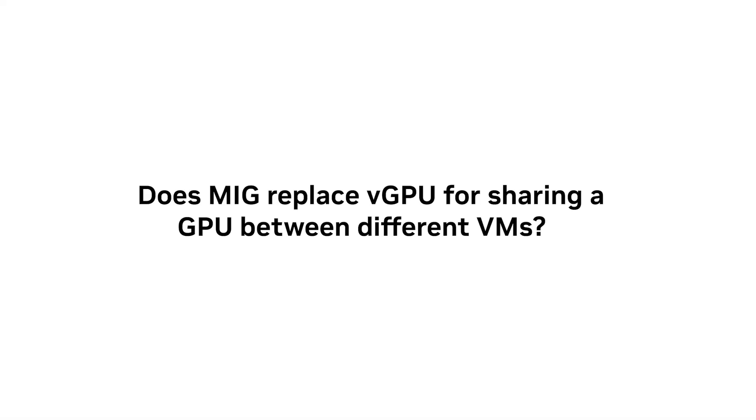So does MIG replace vGPU for sharing a GPU between different VMs? Traditionally, GPU sharing for graphics workloads used time-slicing. Now that we have MIG for graphics workloads too, does this mean we don't need vGPU at all? No, because time-slicing and MIG are complementary technologies — simply different ways to share a GPU, each best suited to different types of workload. In either case, vGPU is the control plane.